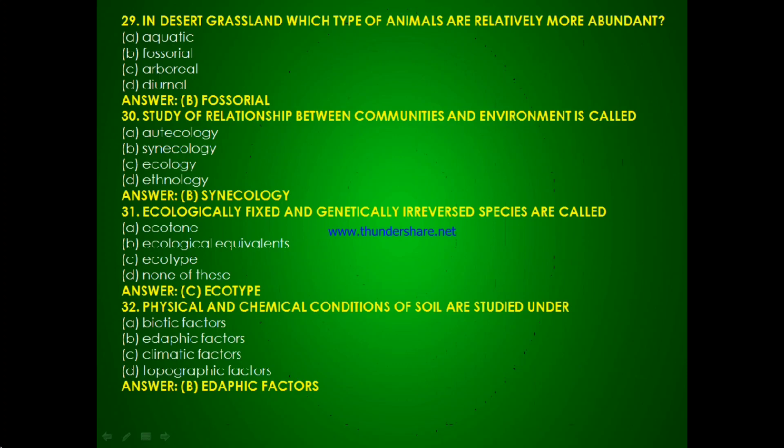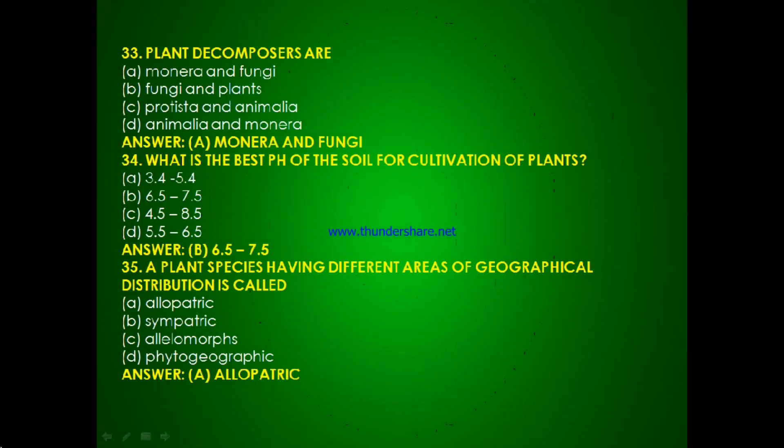Question 30: Physical and chemical conditions of the soil are studied under — biotic factors, edaphic factors, climatic factors or topographic factors? The answer is B, edaphic factors. Question 31: Plant decomposers are — monera and fungi, fungi and plants, protist and animalia, or animalia and monera? The answer is monera and fungi.